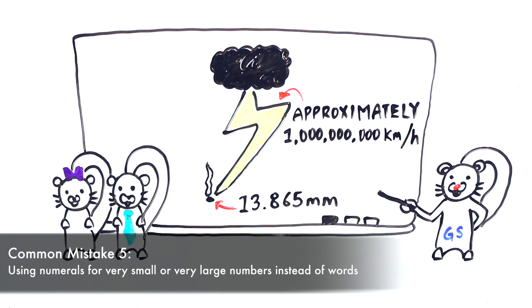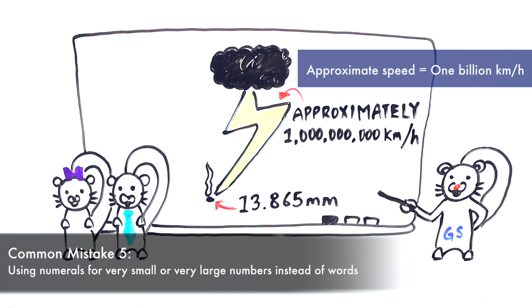And secondly, he says that when using very small or very large numbers, you can often make them easier to interpret by using words. For example, Grammar Squirrel could have referred to the speed of the lightning as approximately one billion kilometers per hour.